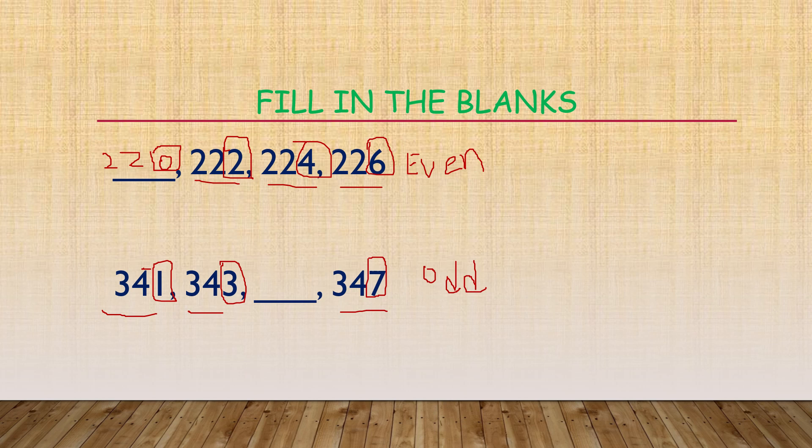Now, what is the answer here? In between 3 and 7, which number will come? Odd number, right? 5. That's why, what is the 3-digit number? 345.